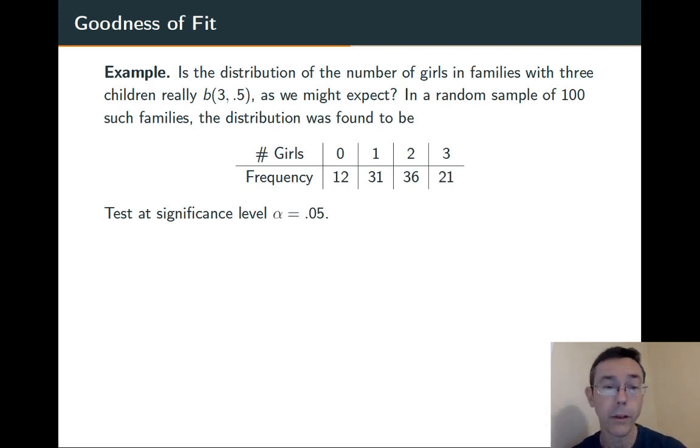So in a random sample of size 100, we get this certain distribution, and we'd like to test at significance level alpha equals 0.05 the hypothesis that the distribution of girls in these families really is b of 3 comma 0.5.